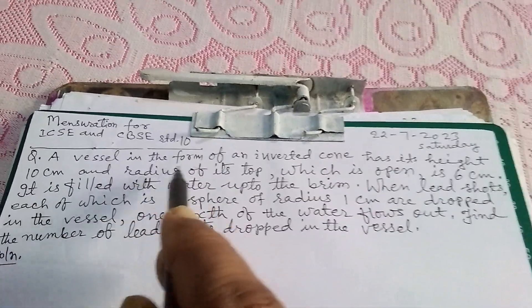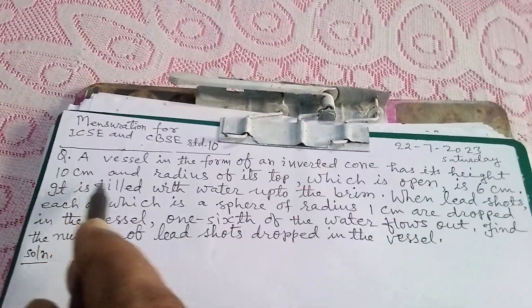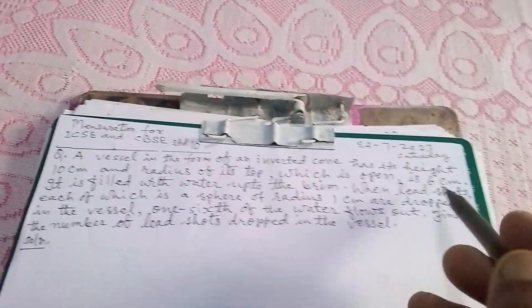Question: A vessel in the form of an inverted cone has its height 10 centimeter and radius of its top which is open is 6 centimeter.